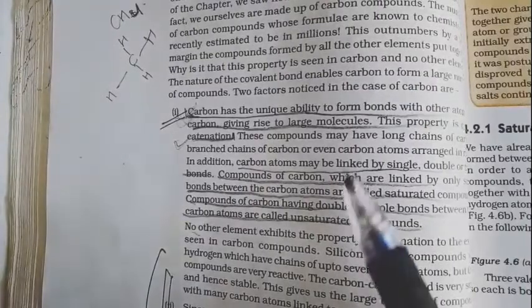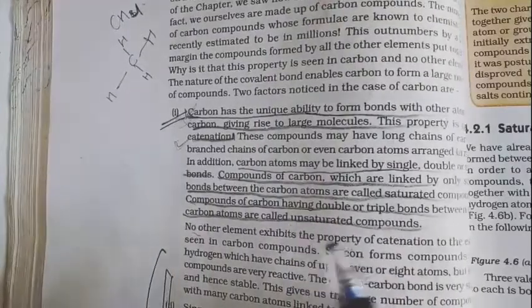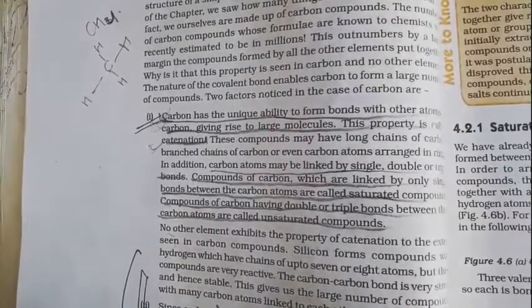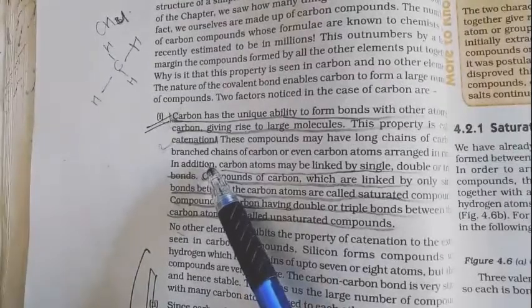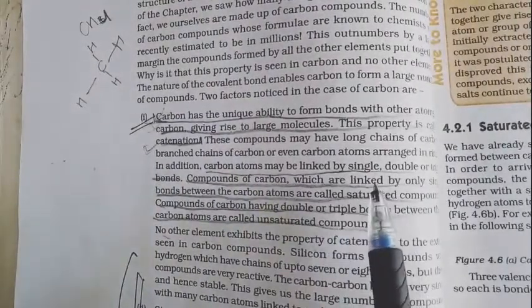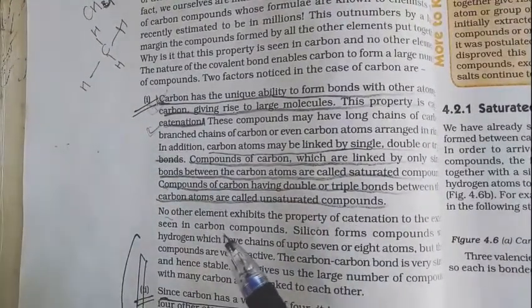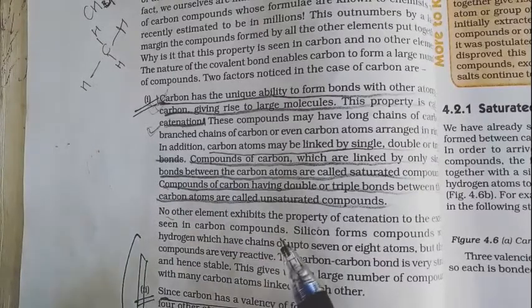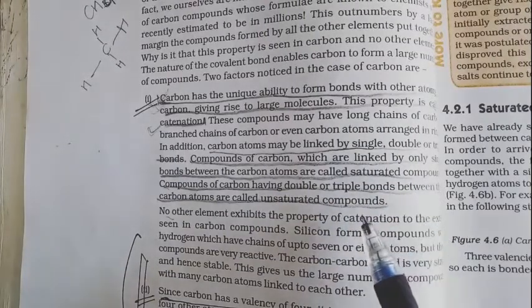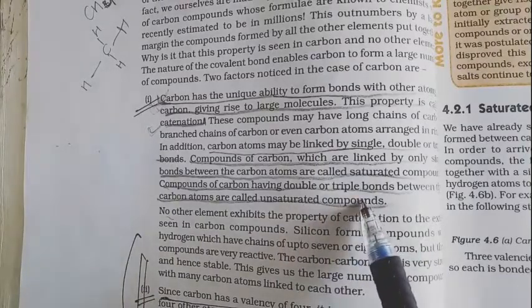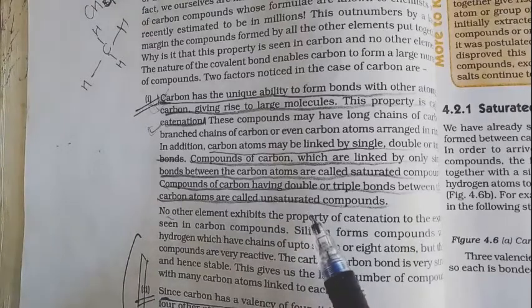Now, these bonds can be created as single bonds, double bonds, or triple bonds. The structure can be in branched form or long chains. If we look at carbon bonds with single bonds, we see saturated compounds. The compounds of carbon which have double bonds and triple bonds are called unsaturated compounds.